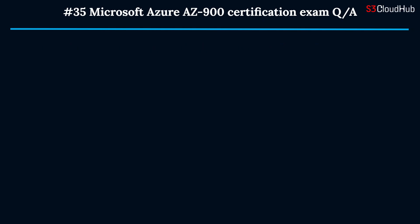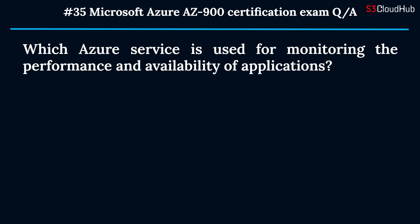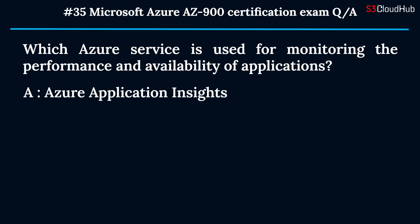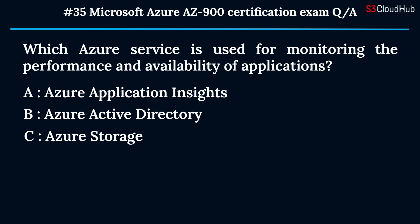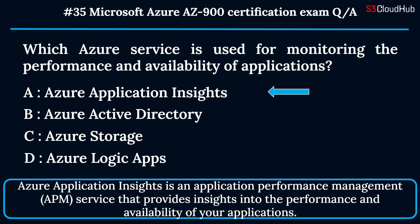The thirty-fifth question: which Azure service is used for monitoring the performance and availability of applications? Option A: Azure Application Insights. Option B: Azure Active Directory. Option C: Azure Storage. Option D: Azure Logic Apps. The correct answer is option A. Azure Application Insights is an application performance management (APM) service that provides insights into the performance and availability of your applications.